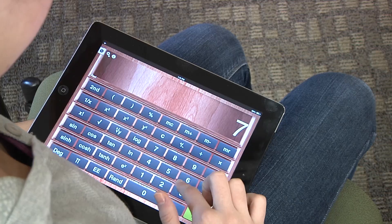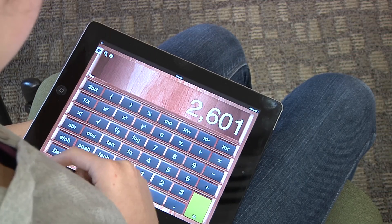73. 73 squared is 5,329. Correct. How about another two-digit number? 51. 51 is 2,601. Correct.